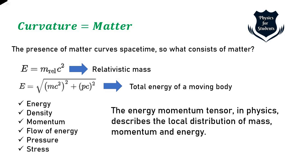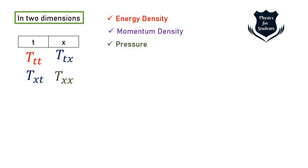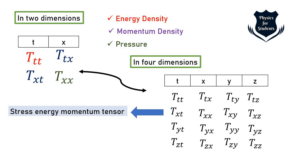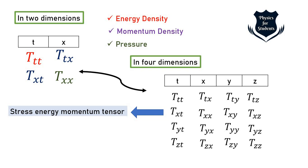In two dimensions, the stress-energy tensor is a 2×2 matrix: energy density in red, momentum density in purple, and pressure in green. Expanding to four dimensions gives a complete 4×4 matrix with dimensions T, X, Y, Z — corresponding to the four-dimensional spacetime measured by μν. This is the stress-energy momentum tensor expanded from two to four dimensions.